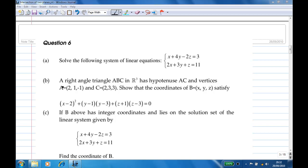It says that a right angle triangle ABC in three-dimensional space has hypotenuse AC and vertices A is 2, 1, minus 1, C is 2, 3, 3.